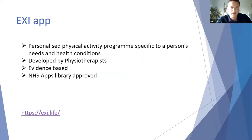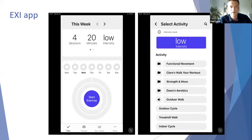Another useful app is EXI — previously called iPrescribe. It allows you to enter medical information such as diabetes, stroke, or Parkinson's, and it puts together an evidence-based exercise program, developed by physiotherapists and NHS app library approved. It's designed around helping you reach your target amount of exercise for the week. There are different exercise options, so if you're not motivated toward one area, you can choose what to do on a given day. It gradually builds up exercise to increase stamina, and patients can collect and submit data for you to track their progress.